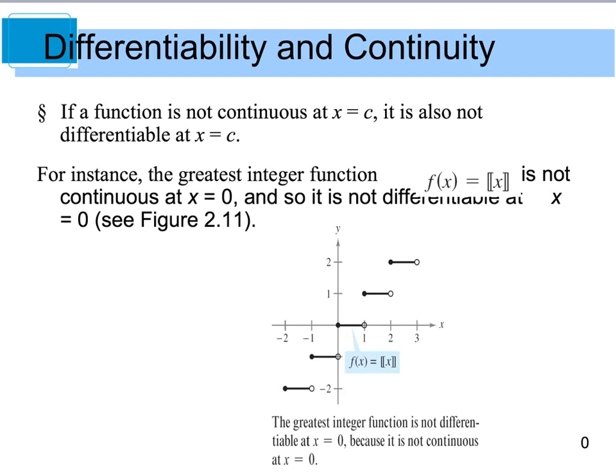Now you'll be able to take the derivative between like 0 and 1 or 1 and 2, but you're not going to be able to do it at a specific integer because you have those discontinuities.